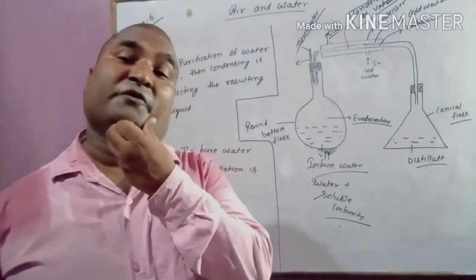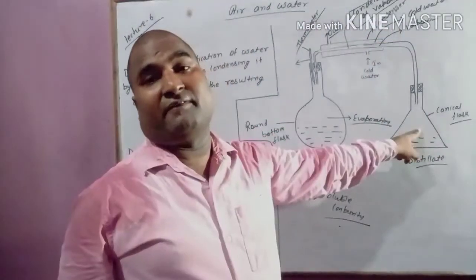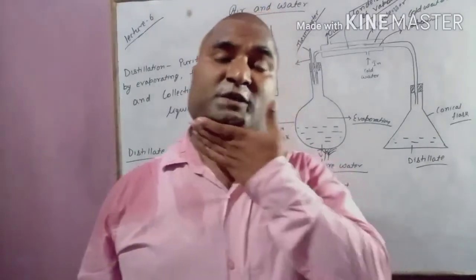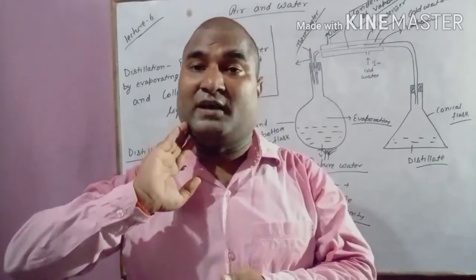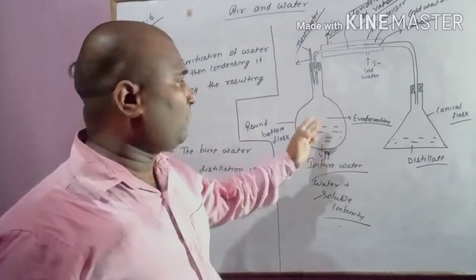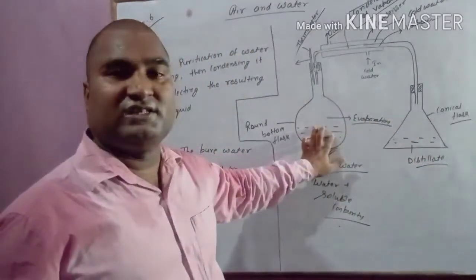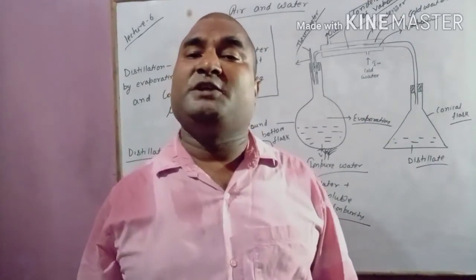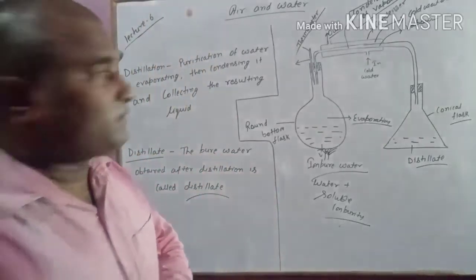Distillation is a process for purification of water in which water is first evaporated, then condensed, and then the purified water is collected — that is called distillate. One important difference: in evaporation, water is lost into the atmosphere and only the salt is obtained. But in distillation, the salt remains in the round bottom flask while the water gets vaporized and collected as distillate. So with distillation you can collect both the pure water and the salt, whereas with evaporation you can collect only the salt.